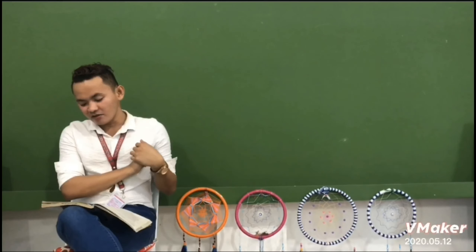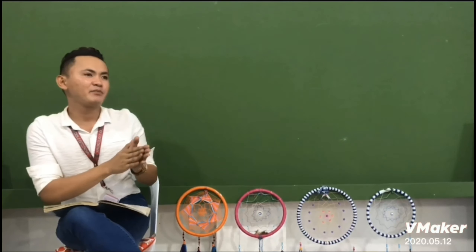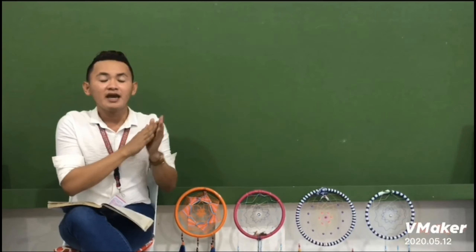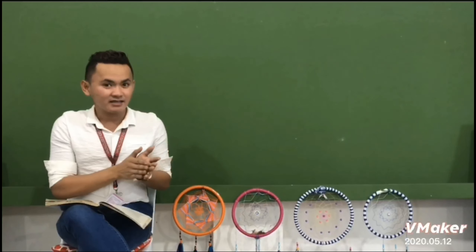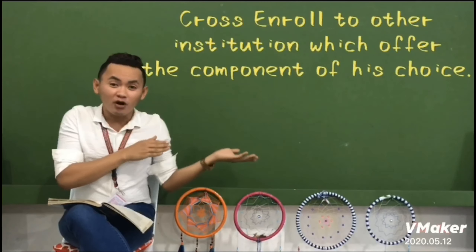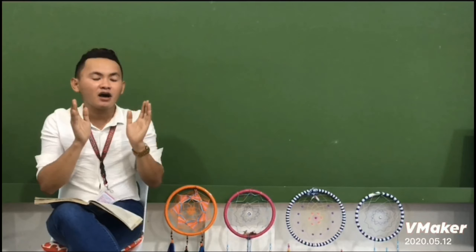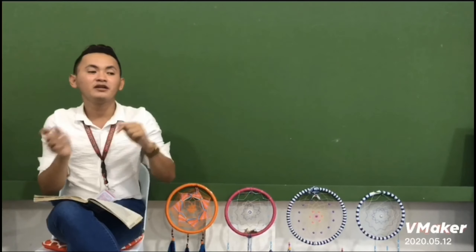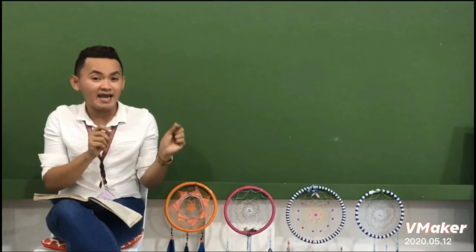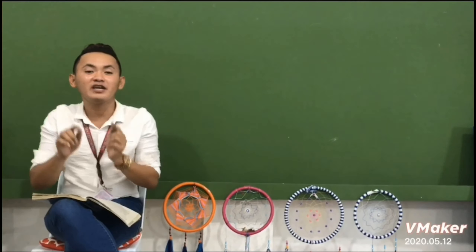What if the NSTP component you want is not offered in your school? For example, a student enrolled in our institution and our school does not offer LTS, but the student really wants to take LTS. In that case, the school registrar can allow the student to cross-enroll in another institution where LTS is offered. However, the student remains covered by the rules and regulations of their school of origin. They only enroll in another institution to access the component they want.